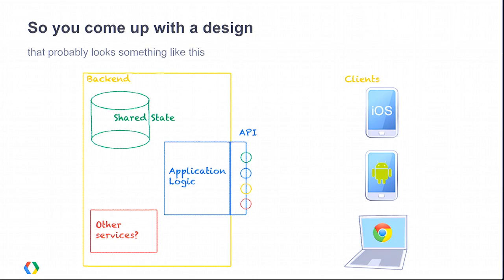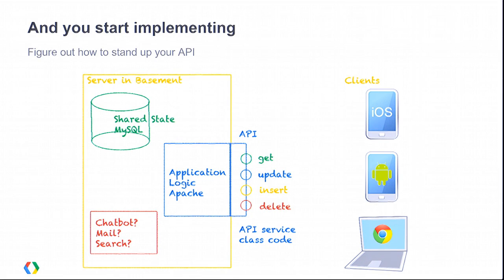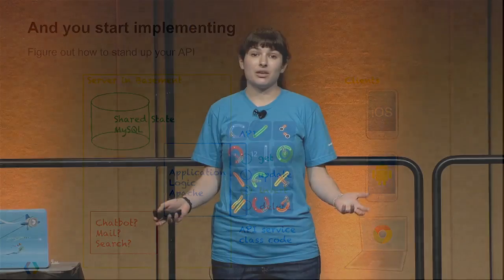This seems like a pretty reasonable design, so let's go ahead and start to actually build this thing. The first thing we're going to do is probably pick an open source stack and stand this up maybe on a server we have lying around in the basement. We'll stand up Apache, we'll stand up MySQL, get those two playing nicely together. Then we're essentially ready to start building the core of the application. We start implementing the application logic, figure out what the API is going to look like, write all the service class code.